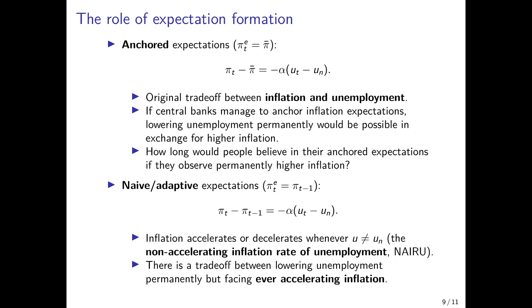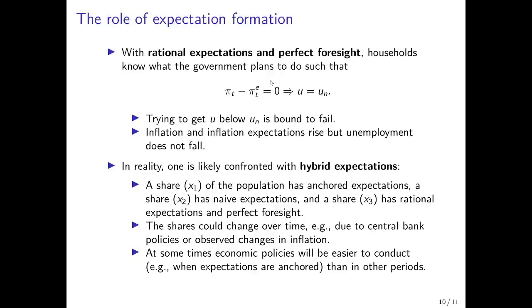We could also have rational expectations and perfect foresight, where households completely understand what the government is doing and immediately adjust their inflation expectations accordingly. In this case, they would always correctly predict inflation, and the difference between actual and predicted inflation would always be zero, implying that the actual unemployment rate would always equal the equilibrium unemployment rate. There are no policies that would allow decreasing the unemployment rate below the natural rate — such policies are bound to fail because households would immediately understand and adjust expectations.